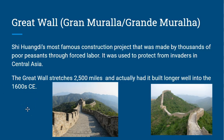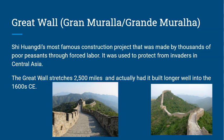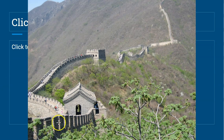The Great Wall is Qin Shi Huangdi's most famous construction project, built by thousands of poor peasants through forced labor. It was used to protect China from invaders in central Asia. The Great Wall stretches 2,500 miles and was actually built well into the 1600s — meaning construction wasn't finished until just 400 years ago.